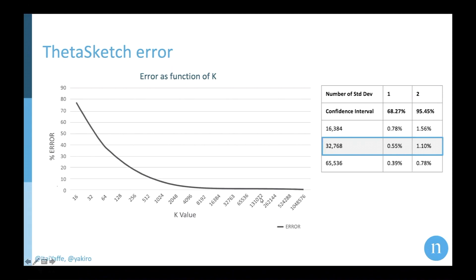If you think about it, it makes a lot of sense, because a larger K means that you have more elements in your sample. But there is a trade-off, because more elements mean more storage. So you need to find the right balance between the accuracy requirements and the storage requirements for your solution, and find the numbers that work best for you.